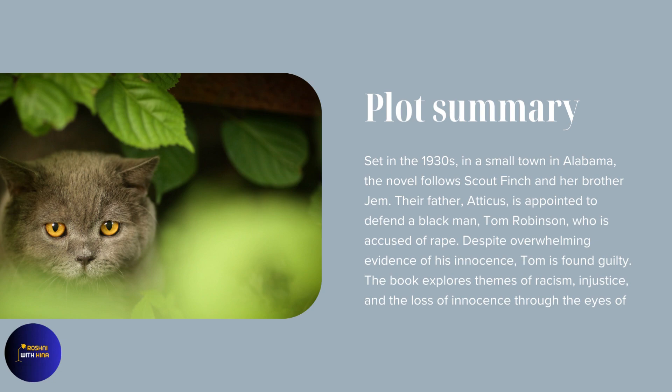Plot Summary: Set in the 1930s in a small town in Alabama, the novel follows Scout Finch and her brother Jem. Their father Atticus is appointed to defend a black man, Tom Robinson, who is accused of rape. Despite overwhelming evidence of his innocence, Tom is found guilty. The book explores themes of racism, injustice, and the loss of innocence through the eyes of the children.